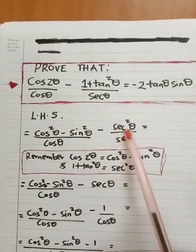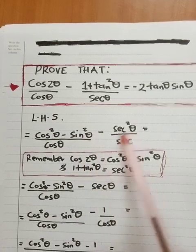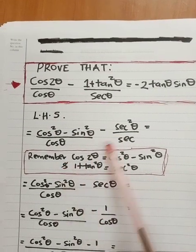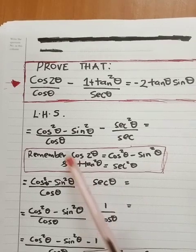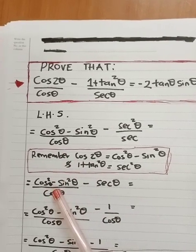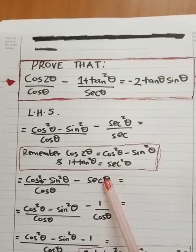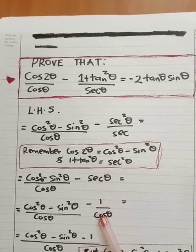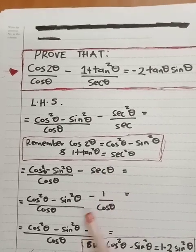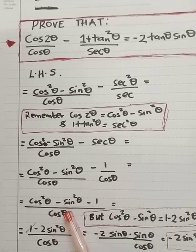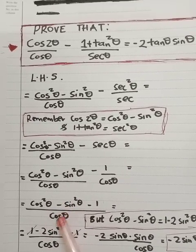Now I'm going to simplify this equation further. sec²θ divided by secθ gives secθ, so this one just remains as it is. Now, secθ is the same as 1 over cosθ, so I'm going to replace secθ with 1 over cosθ. Then I'm going to take the LCM, and the LCM here is just cosθ.